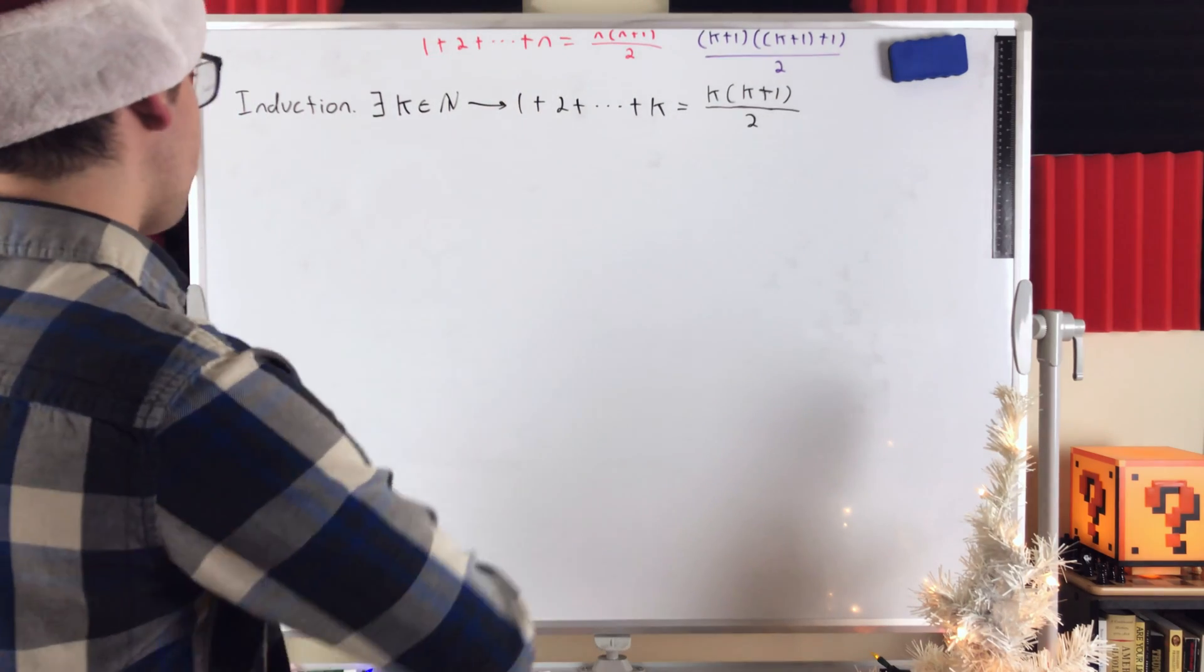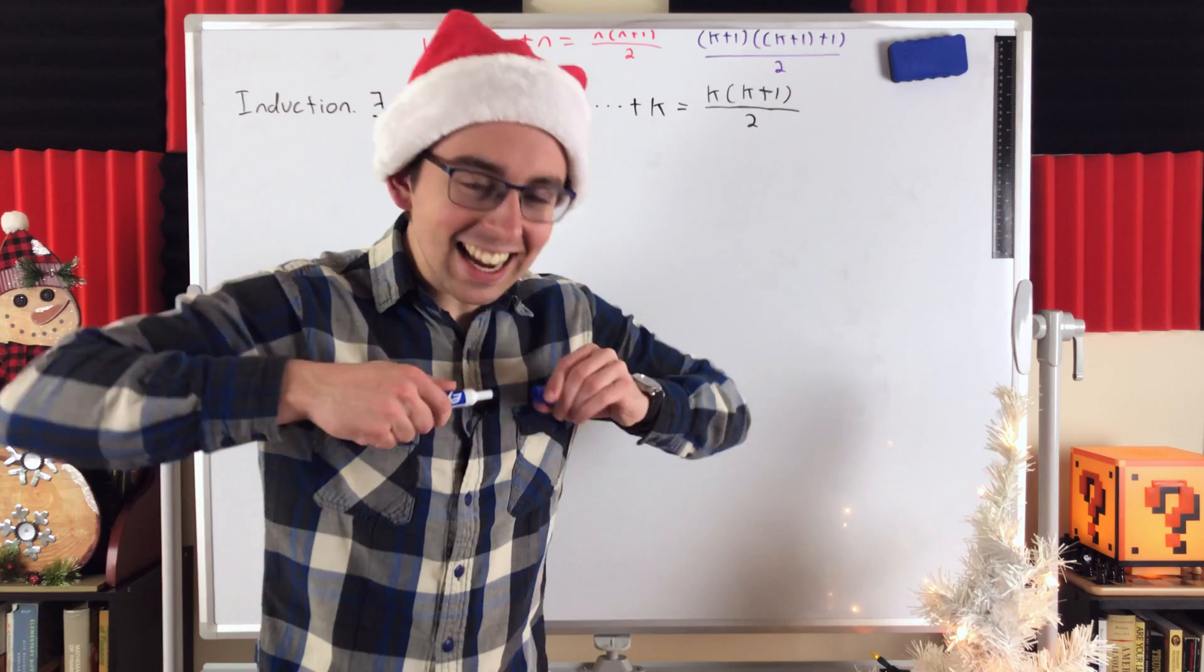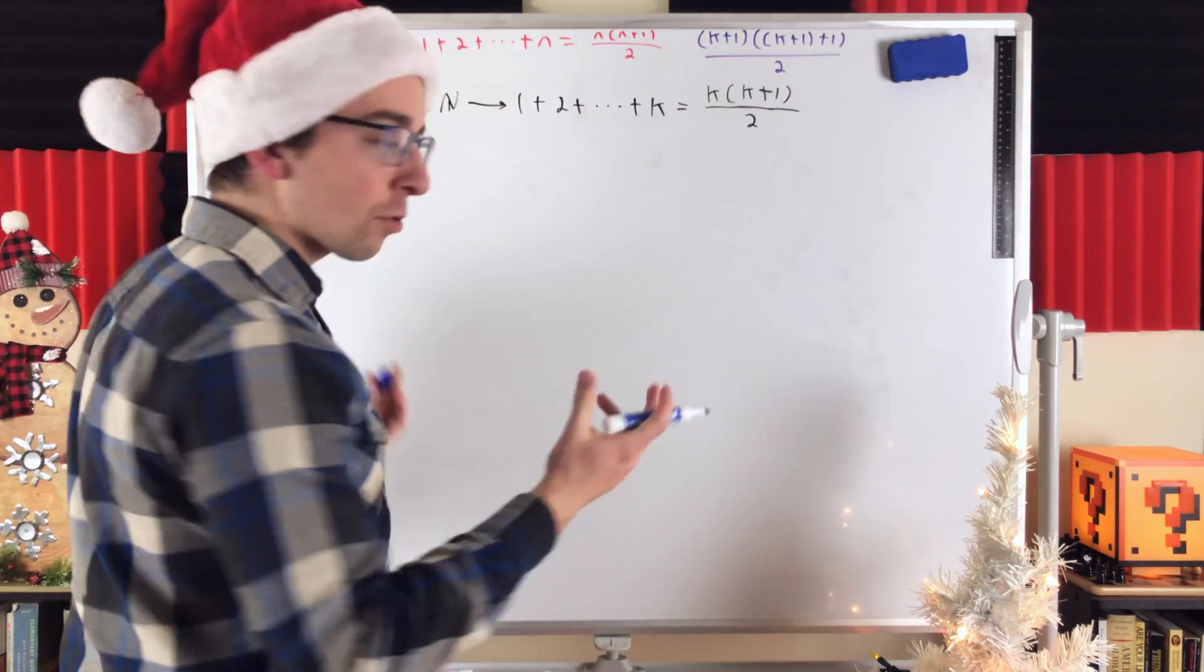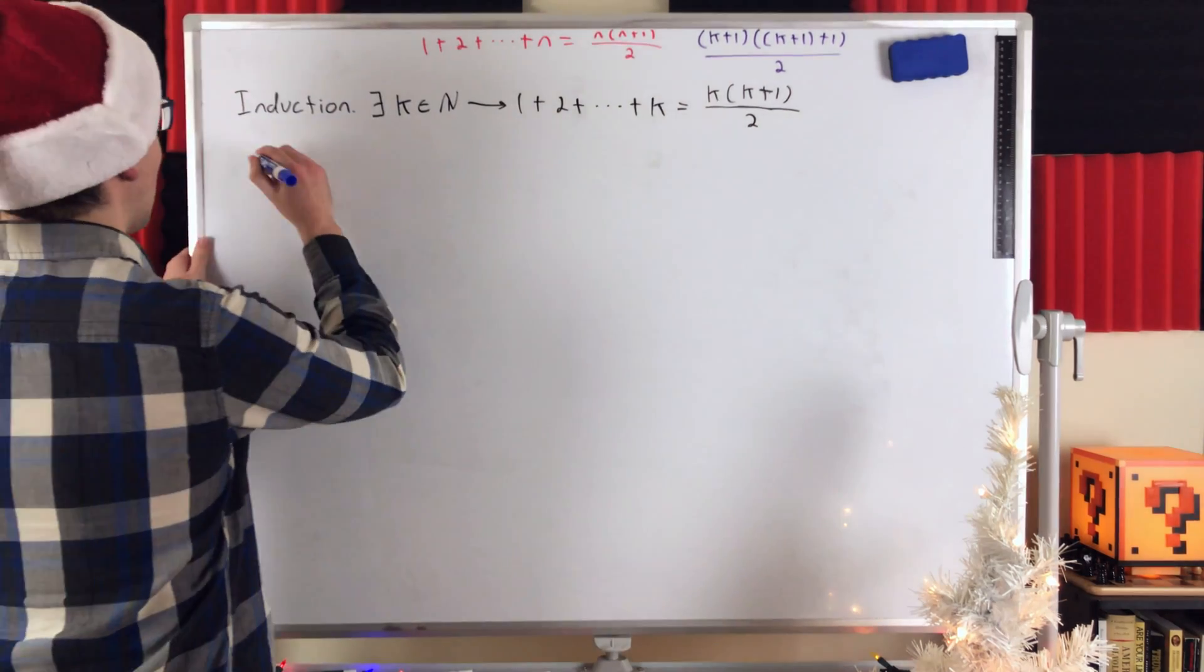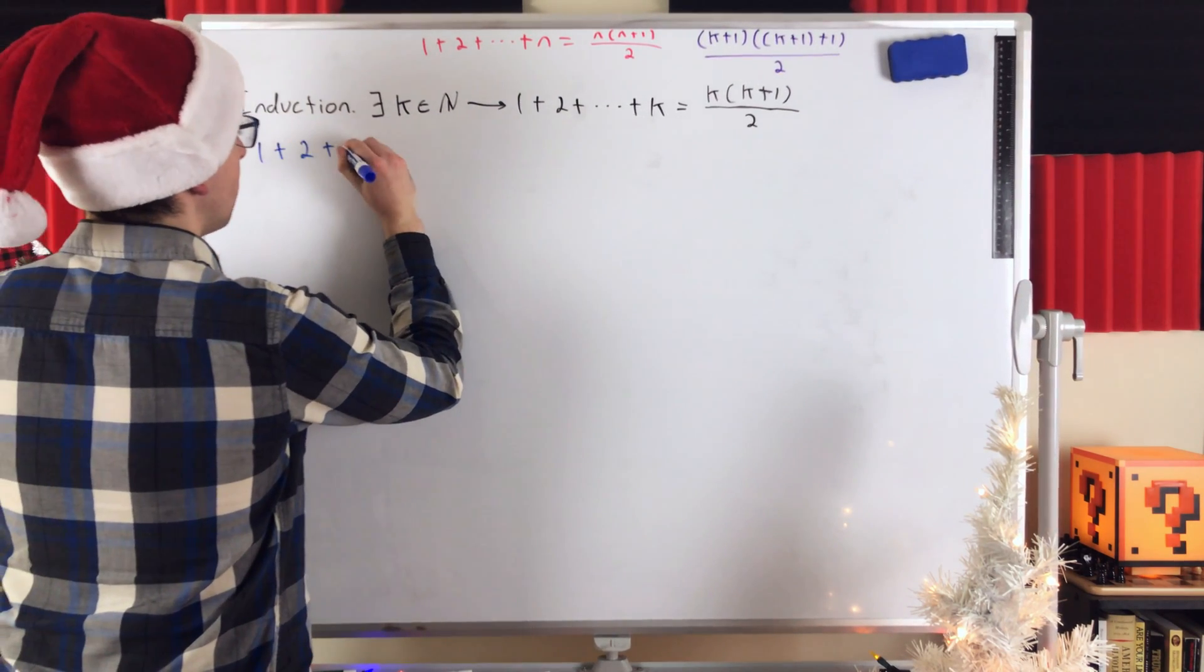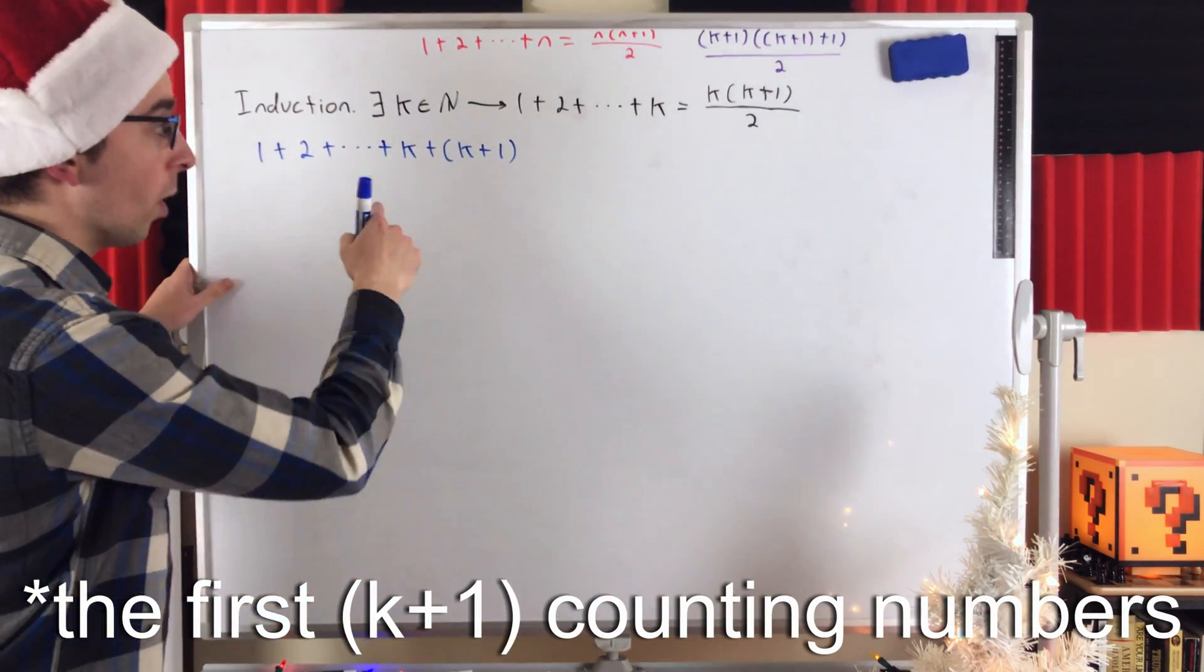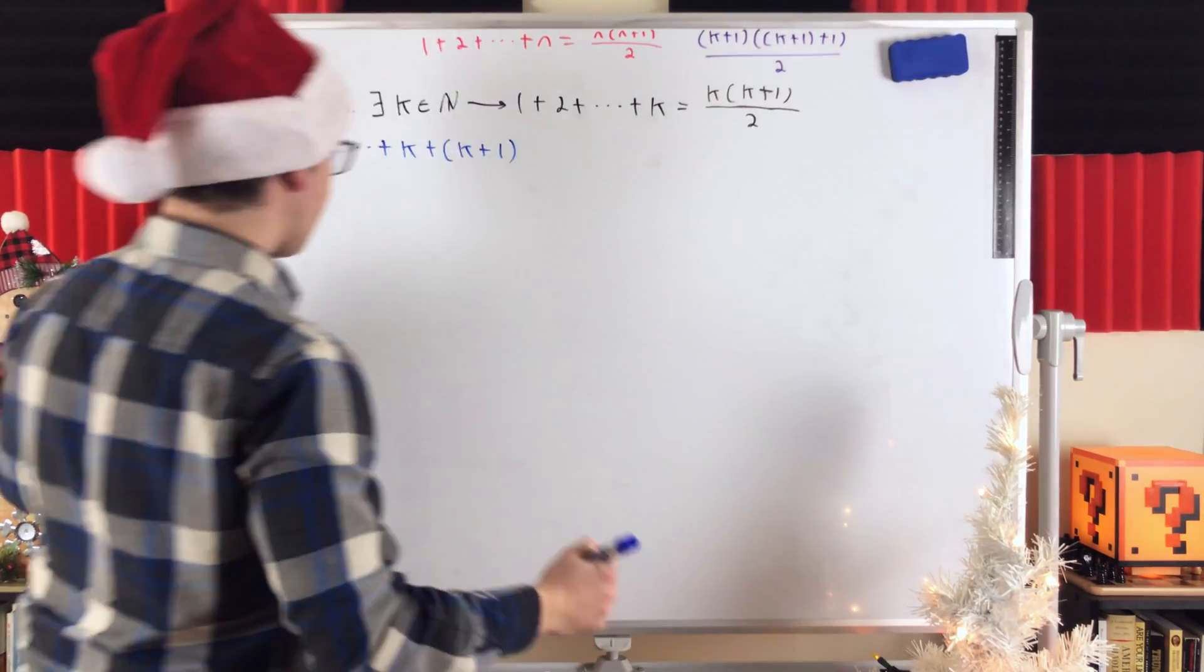We should start naturally by looking at the sum we're interested in now. We're interested in the sum of the first k plus 1 counting numbers. So, let's start there, 1 plus 2, and so on, all the way up to plus k plus k plus 1, the sum of the first counting numbers. We want to prove that this is equal to that.